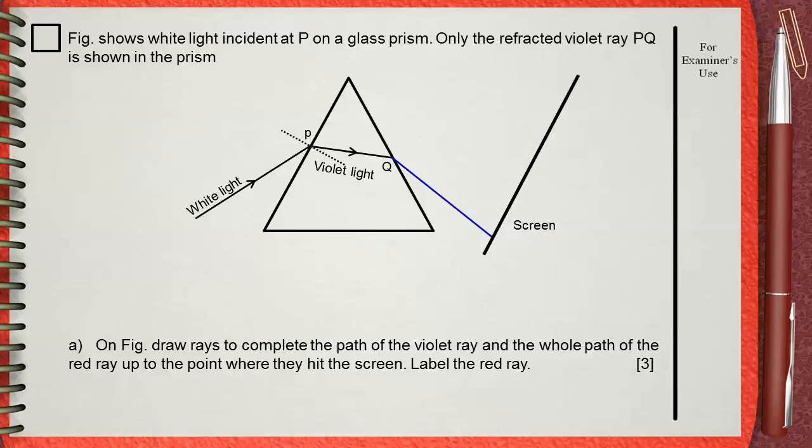Now we want to draw the red ray. As you see, the violet ray in the prism bends towards the normal. This is exactly what will happen to the red ray. But the red ray bends less than the violet ray. So let's do the same.